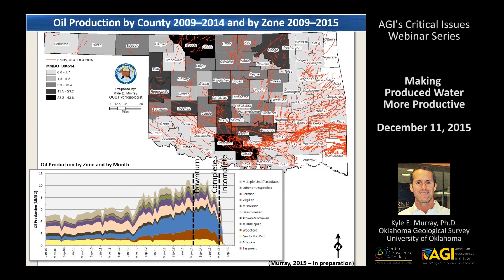What I want to achieve is to be able to estimate produced water volumes, since they are not currently reported by operators and I have to find a method to estimate them. I organized the oil production by zone — those same ten zones — and look at the production over time in the chart at the bottom and in space in the map at the top. Oil production in 2009 was primarily from the upper sandstone units and more conventional production, but as we move forward in time we have more unconventional production and dewatering and development of carbonate-rich and shale-rich zones.